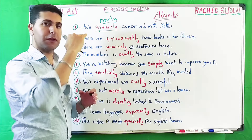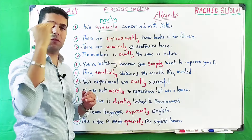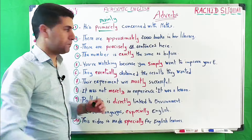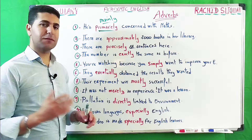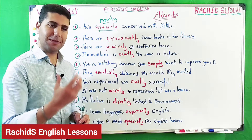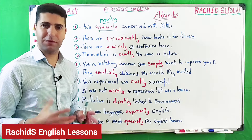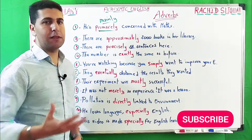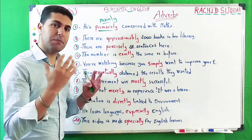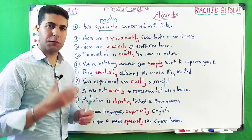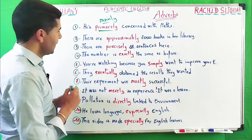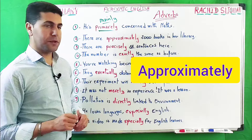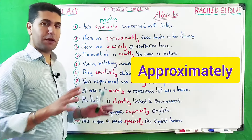It is the top, or one of his top interests or concerns — mathematics, physics, whatever. For example, we can say: 'The government is primarily concerned with decreasing joblessness in the country.' Reducing joblessness is the main or major concern of the government. Next: 'There are approximately 2,000 books in her library.'